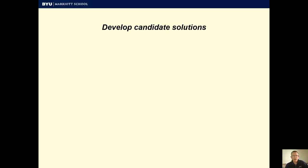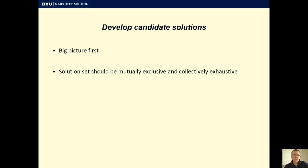The next step is developing candidate solutions. Think big picture first — instead of packaging colors or materials, think about: are we selling to the right customers? How are we making money? What are the long-term market trends? Start big and then go small. You want to create a solution set that's mutually exclusive and collectively exhaustive. Each potential solution should be different from the others, but when you roll them all up, you should have all of the potential solutions covered.